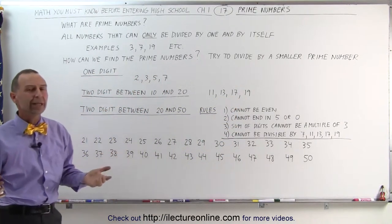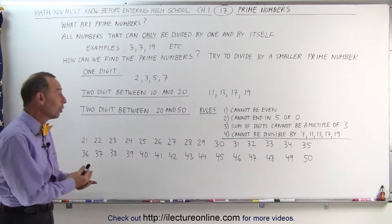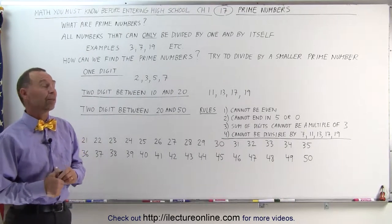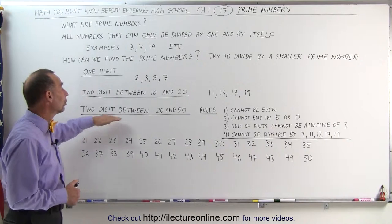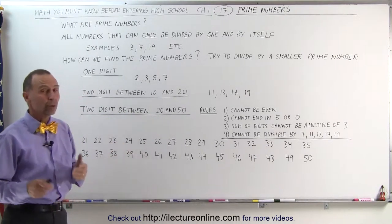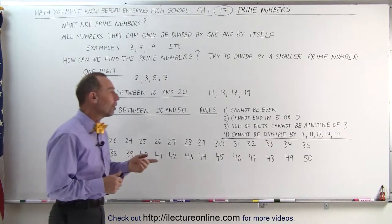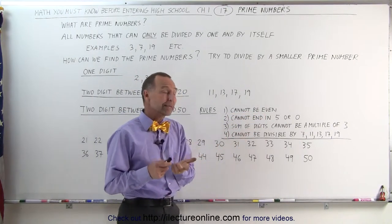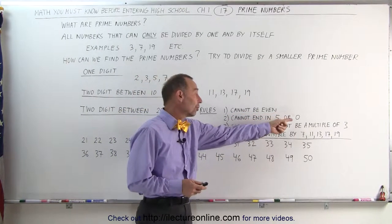But when the numbers get bigger, it's not as obvious as to figure out when you have a prime number or not. For example, the numbers between 20 and 50. Well, the rules are as follows. First of all, the number cannot be even. The number cannot end in a 5 or a 0.